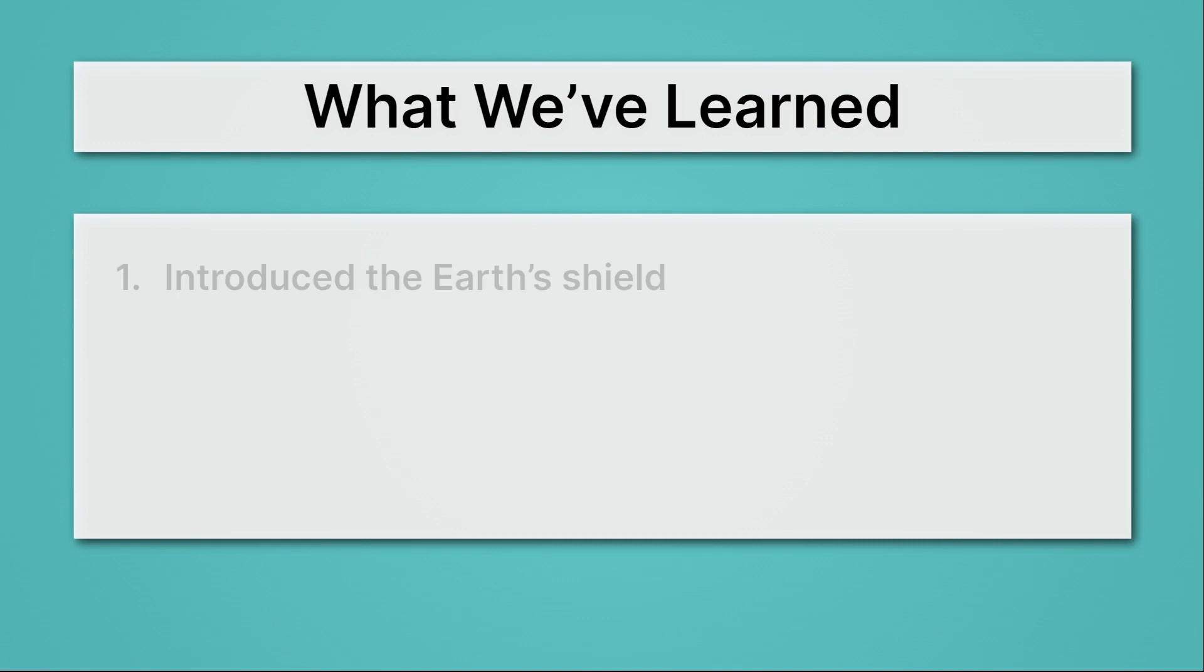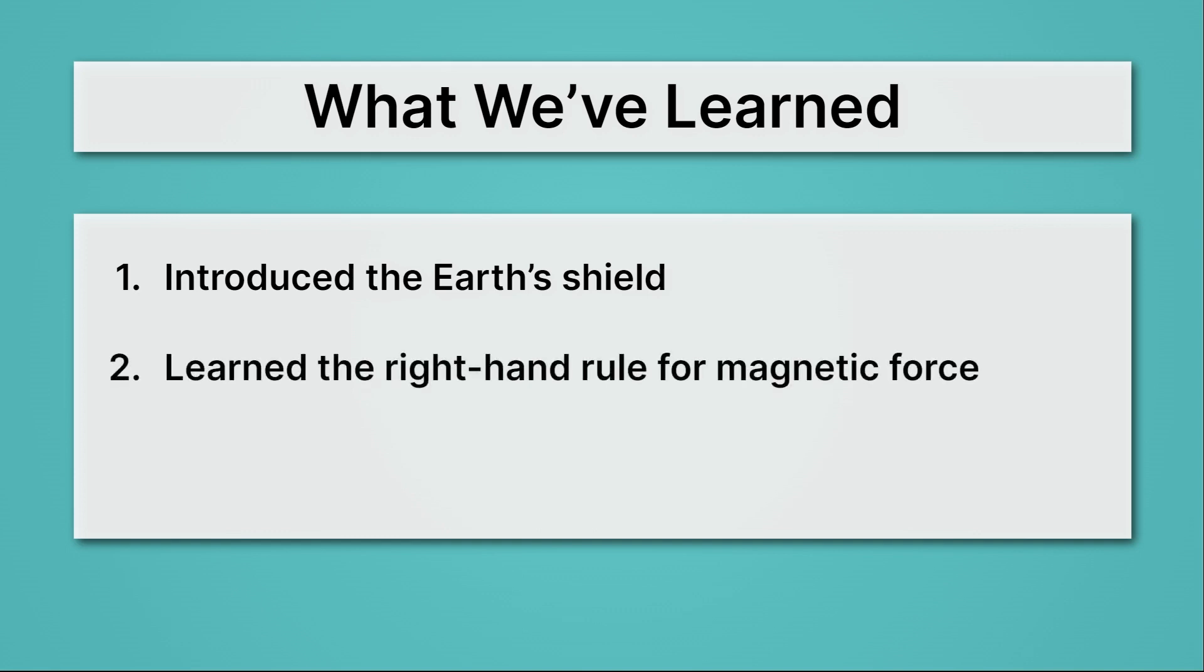Let's review what we've learned. First, we introduced the Earth's shield. We saw that the Earth's magnetic field can protect it from charged particles. Then we learned the right-hand rule for magnetic force. We saw that if you take your pointer finger and put it in the direction of the charges, your middle finger and point it in the direction of the magnetic field, then your thumb points in the direction of the force, the direction that those charges are pushed on. Then we applied the right-hand rule to the Earth's shield.